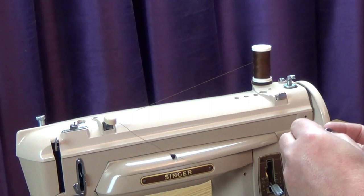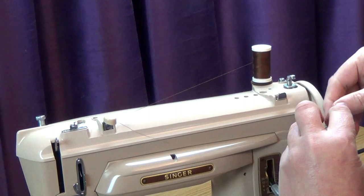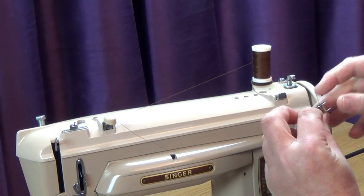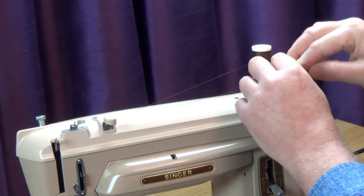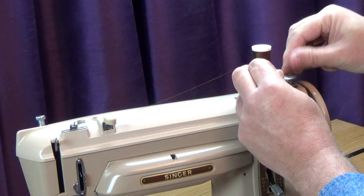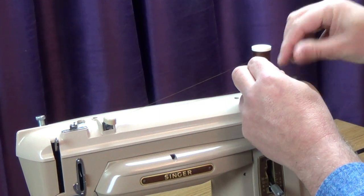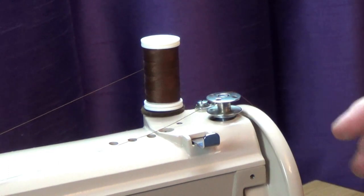Thread through one of the holes in the bobbin, and place on the bobbin winder, making sure the locating pin in the winder clicks into place on the bobbin. Pull out the latch to engage the winder, and start to operate the machine.